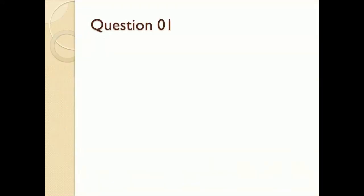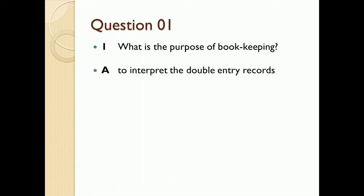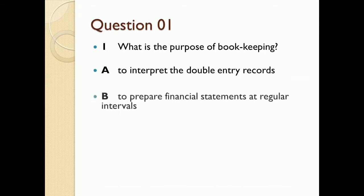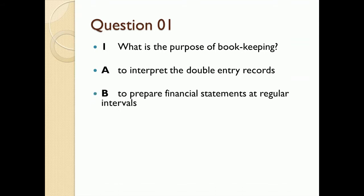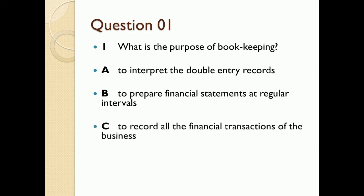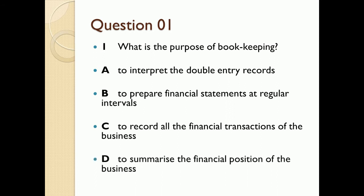Question number one: What is the purpose of bookkeeping? Note that the question relates specifically to bookkeeping, not accounting. Option A: to interpret the double entry records and to prepare financial statements at regular intervals. Option B: to record all the financial transactions of the business. Option D: to summarize the financial position of the business. Only one of these relates to bookkeeping — you have to identify it.